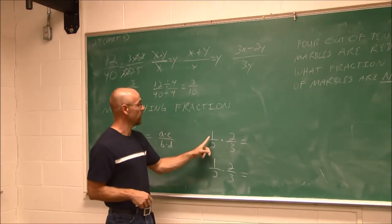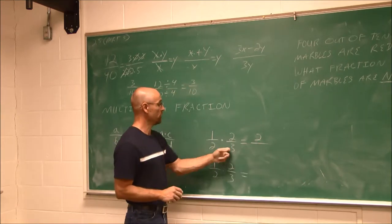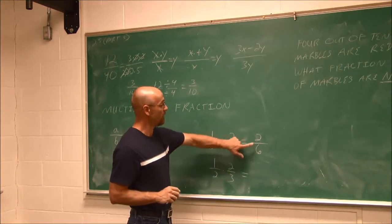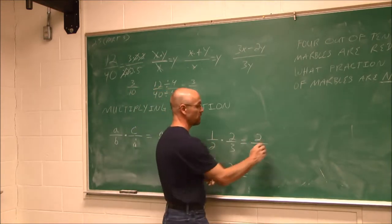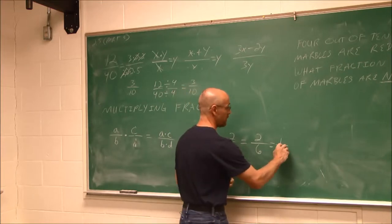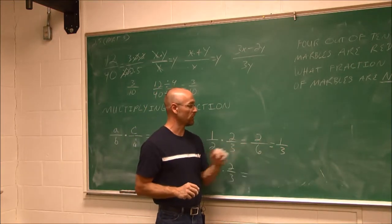As an example, I can say 1 times 2 is 2, 2 times 3 is 6. Then I can choose to reduce. I know both are divisible by 2. 2 divided by 2 is 1, 6 divided by 2 is 3. 2 sixths is equivalent to 1 third.